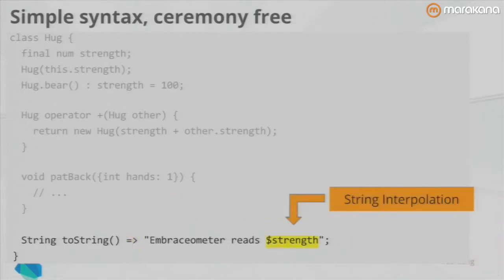Dart also has string interpolation — dollar sign then a variable or expression. It's a little nicer than string concatenation or string builders. You see a real sweet spot between heavily structured ceremonial languages like Java or C# on one end, and highly dynamic scripting languages like JavaScript, Ruby, or Python on the other. Dart is somewhere in the middle, pulling in features from both so you get the structure you need for tens to a million lines of code, but also the terseness and freedom from ceremony of scripting languages.